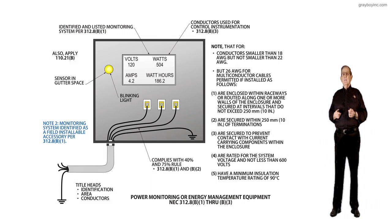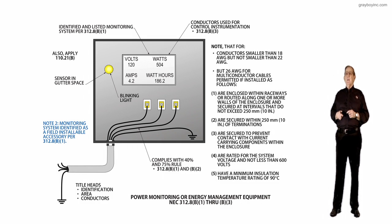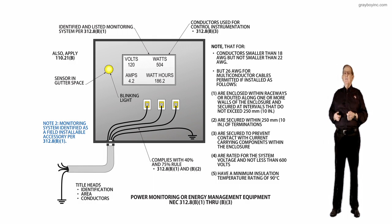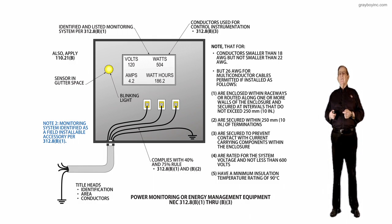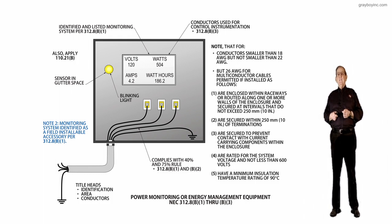Notice the arrow pointing to the conductors that are terminated to the lugs. It says you have to comply with the 40% route. So if you had a 6x6x4, for example, 40% of that would be your gutter space.